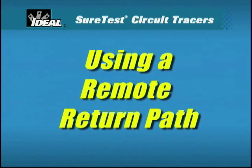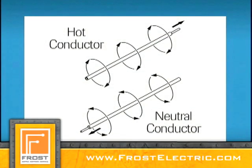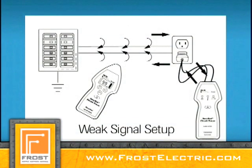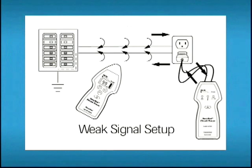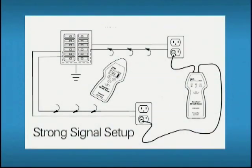The second concept is utilizing a remote return path. When current flows, it creates an electromagnetic field counterclockwise to the direction of current flow. As current flows out on a hot conductor and returns in the opposite direction on a neutral conductor, it creates opposing magnetic fields. If these two wires are close together, the magnetic fields tend to cancel each other out, which diminishes the receiver's ability to detect the signal.